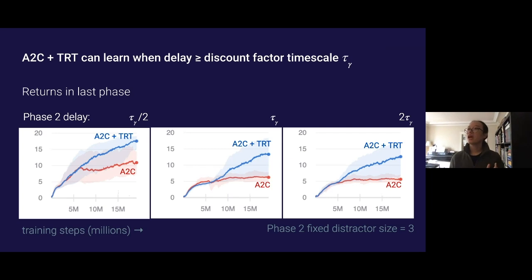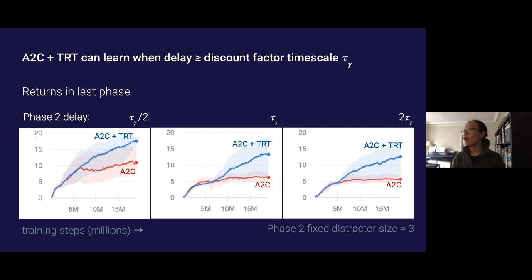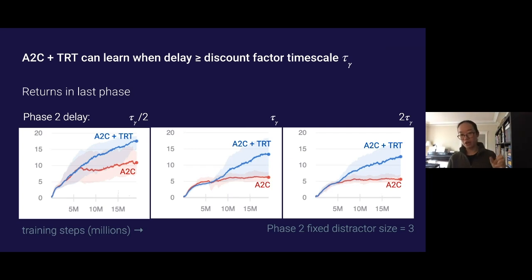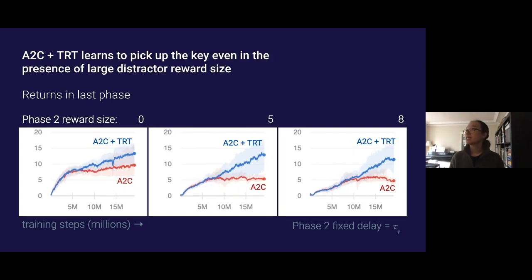These plots show total rewards earned in phase three, indicating whether the agent picked up the key. Moving left to right it becomes increasingly difficult, with each plot corresponding to a longer discount factor timescale tau-gamma. Initially, when the time delay is short, the agent does learn to pick up the key, though TRT on top of Advantage Actor-Critic (A2C) does better than the baseline A2C alone. By the rightmost plot, A2C has plateaued at 5 points — meaning the agent only reaches the goal and never learns to pick up the key — whereas adding TRT shows consistent progress toward learning to pick up the key.